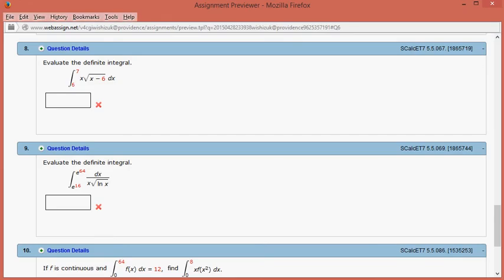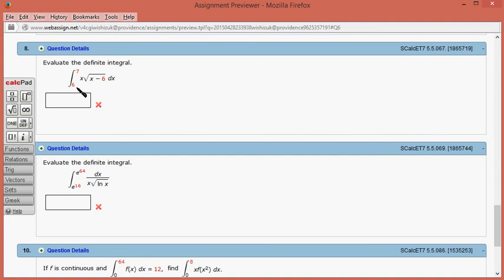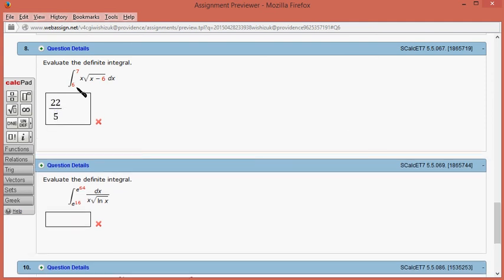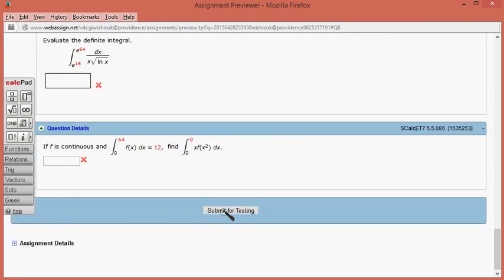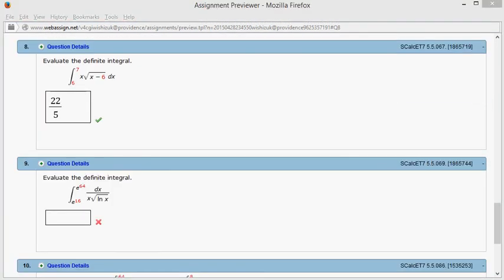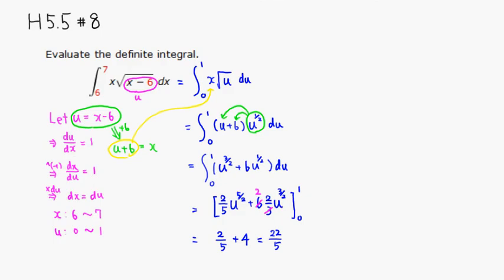Alright, so let's type it in. We got 22 over 5. Submit for testing. Alright, it came back and looks like we got this one correctly. Alright, that's it. I hope that this was clear.